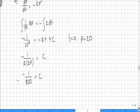We can now substitute this back into our equation giving us minus 1 over 2p squared is equal to minus kt minus 1 over 800.